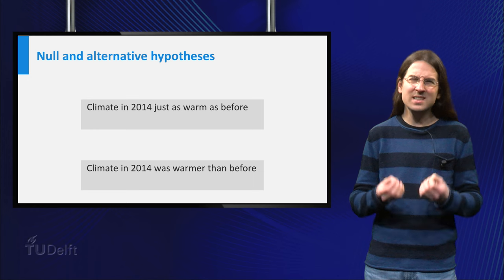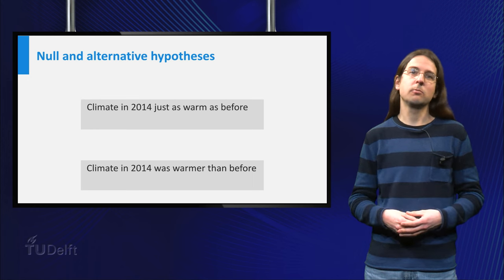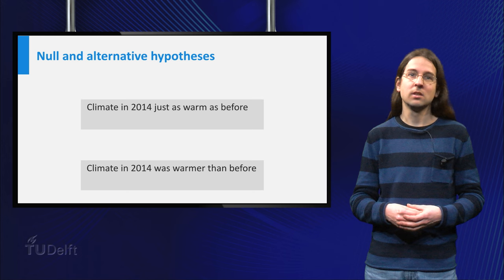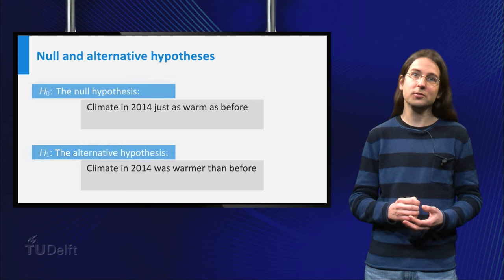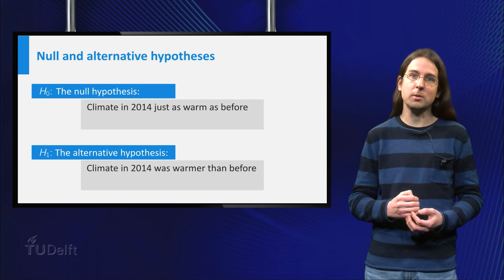We need to formulate this explicitly enough that we can test it in an experiment. Formally, we do this by creating a so-called null hypothesis and an alternative hypothesis.